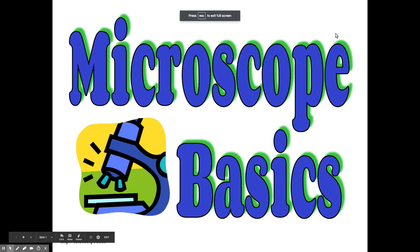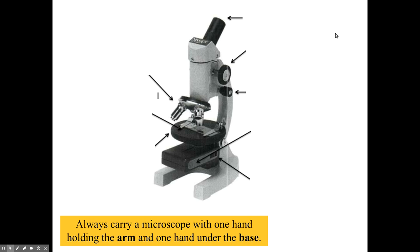So this is our microscope introduction lab. First thing is that you always want to carry the microscope with one hand holding that curved arm and one hand under the base of the microscope. So two hands when you carry it back and forth from the counter to the table and so on.